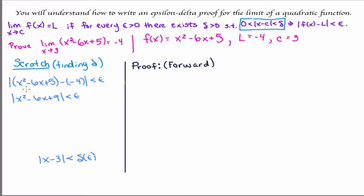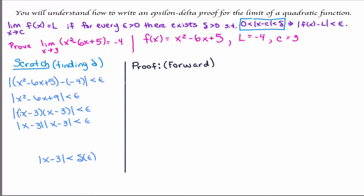Simplifying, we have x squared minus 6x plus 9, because we have 5 plus 4 which gives us the 9, and that's less than epsilon. Factoring x squared minus 6x plus 9 gives us x minus 3 times x minus 3. Now this is inside absolute value, so this is exactly the same as the absolute value of x minus 3 times the absolute value of x minus 3, which is the same as the absolute value of x minus 3 all squared.